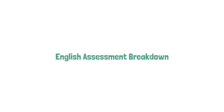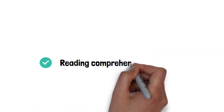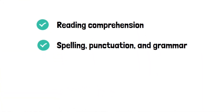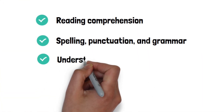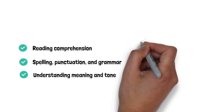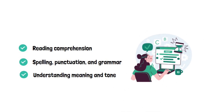English assessment breakdown. The English part of the BKSB test covers reading comprehension, spelling, punctuation and grammar, and understanding meaning and tone. You'll read short passages and answer questions about them, spot grammar errors, and choose the best words for different sentences.